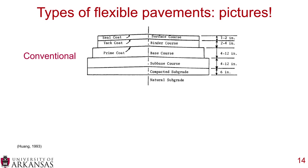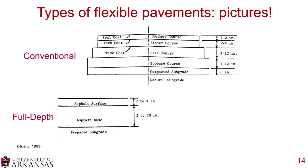In the conventional pavement structure, going from the top down, you have the seal coat, surface courses, binder courses, and base course held together by tack or prime coats, then the sub-base course, compacted subgrade, and natural subgrade. For full depth pavement, you simply have asphalt surface and asphalt base placed on prepared subgrade. Pavement lifts are generally no more than 4 inches thick, so a 20-inch asphalt base requires a minimum of five lifts, each needing tack coats between them.